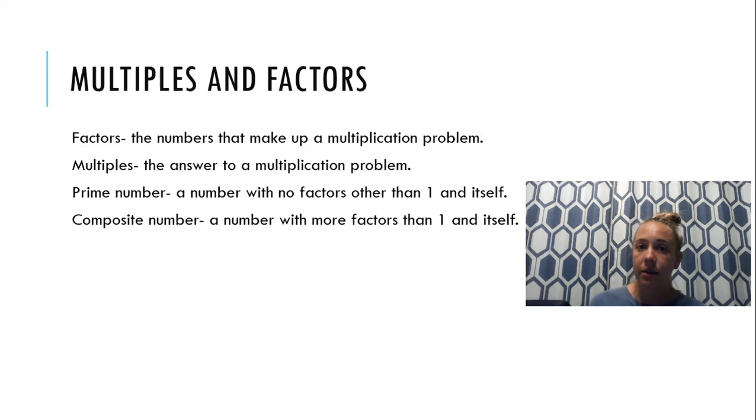A composite number is the opposite of a prime number. This is a number that has many factors. For example, 16 is a composite number because it has 1 times 16, 2 times 8, 4 times 4. Those are the factors of 16, and because there's more than 1 and itself, it is considered a composite number.